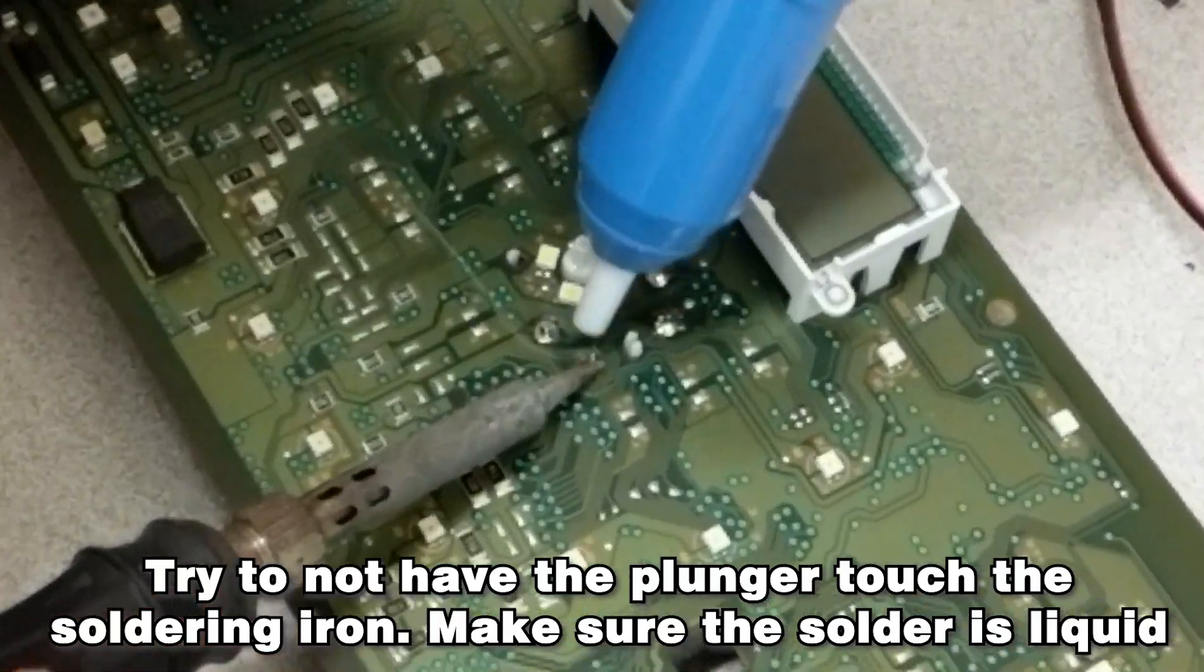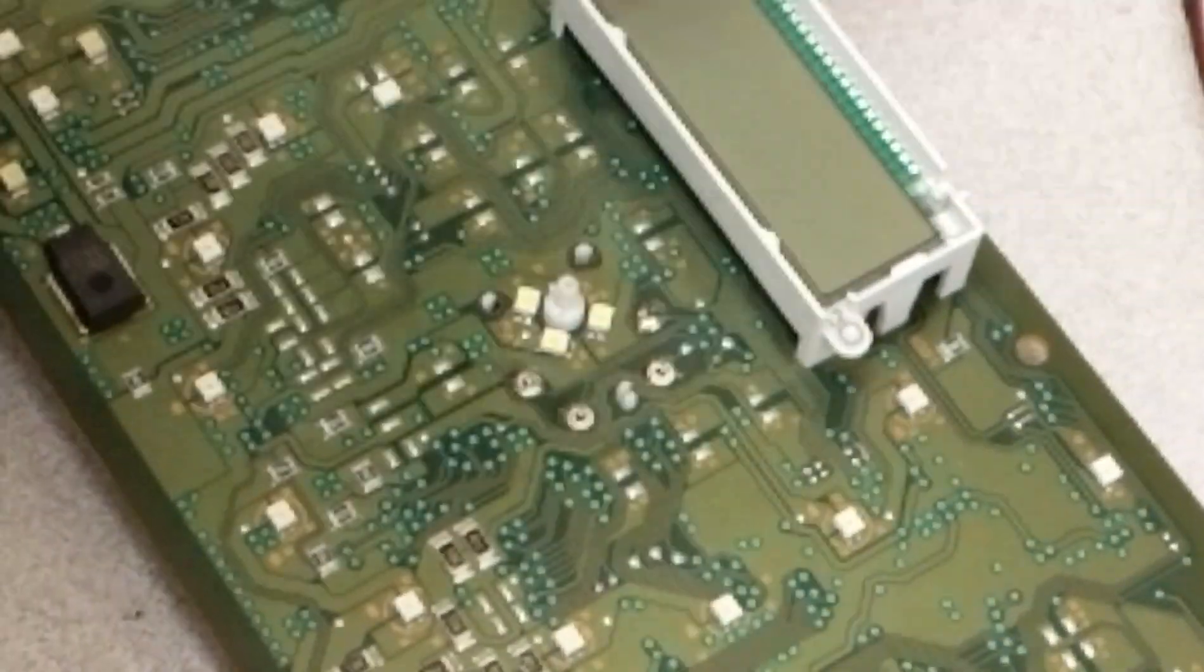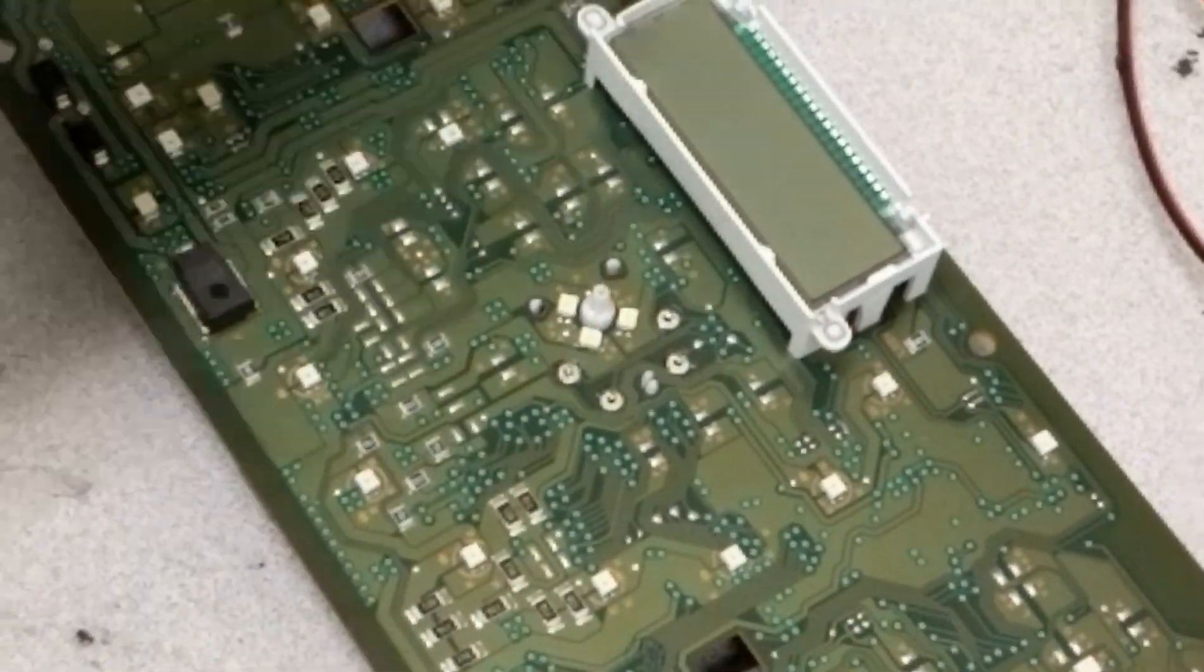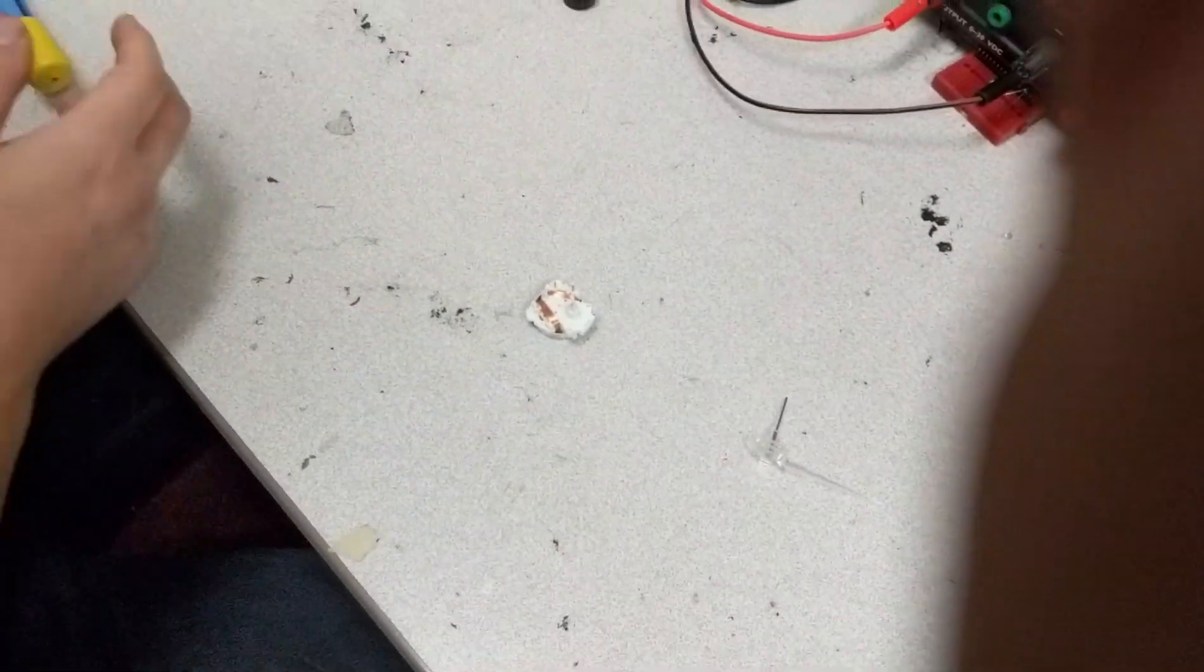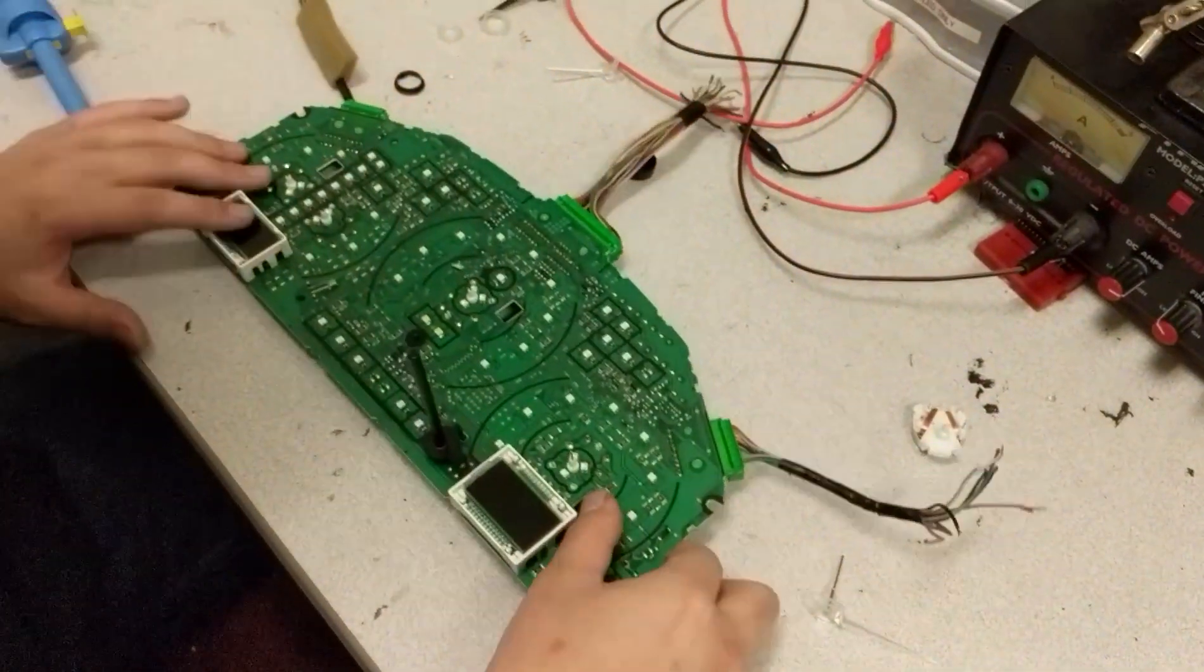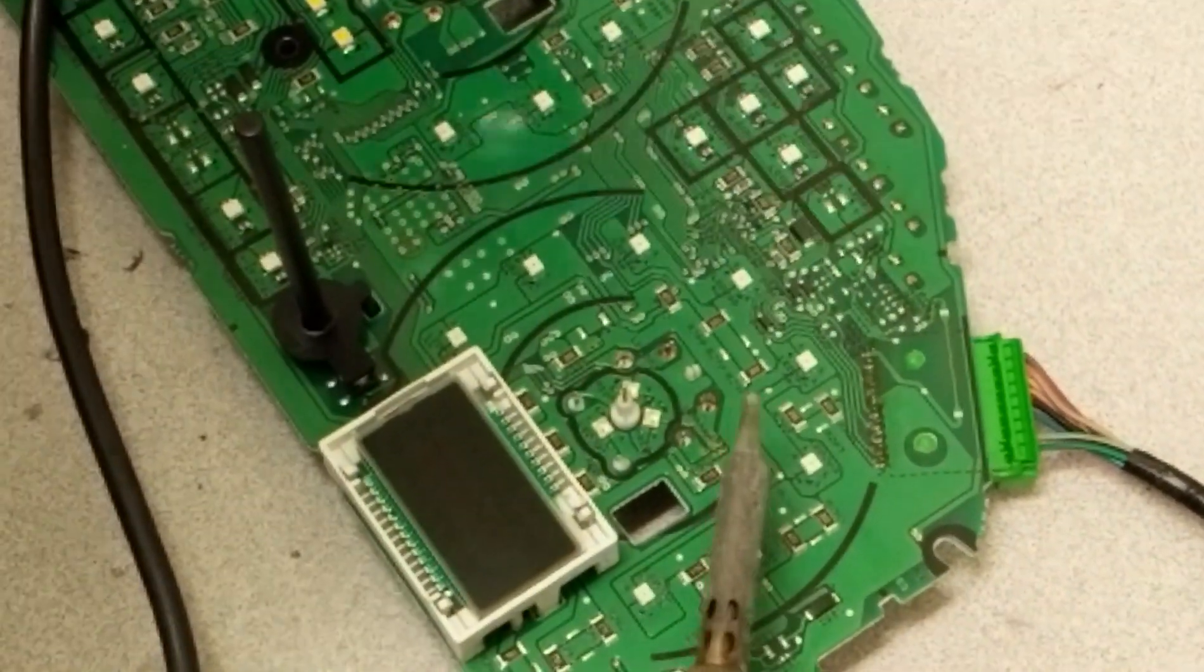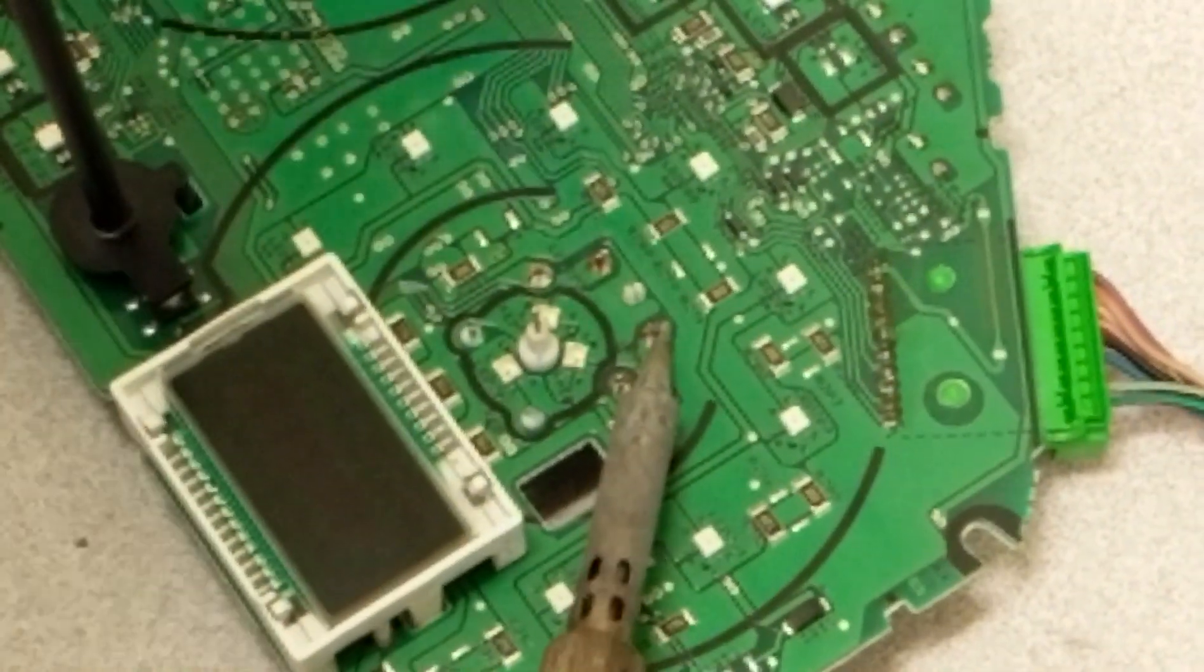I'm going to go ahead and do the other three. Plunge it. There you go. Then this should just slide right out, just like that. Pretty simple. So now I'm going to take this motor and I'm actually going to pull this motor out. This is a perfectly good motor, but we're doing it for demonstration purposes.